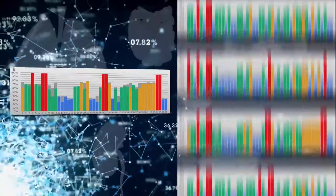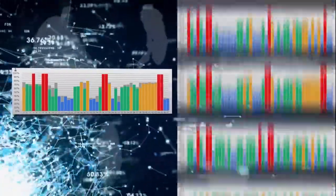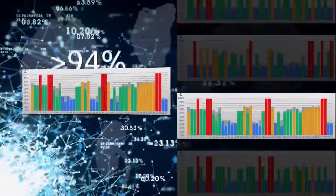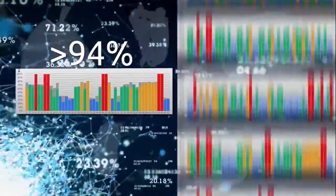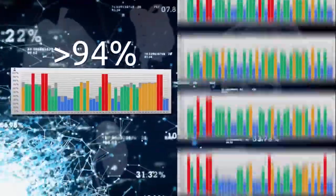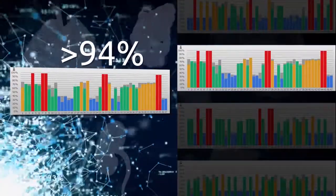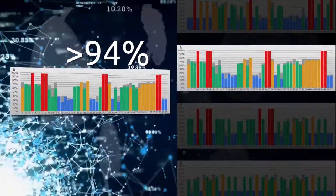After comparing, the server program selects similar charts that more than 94 percent coincide with the obtained readings, indicating probability for every disease and pathogen.